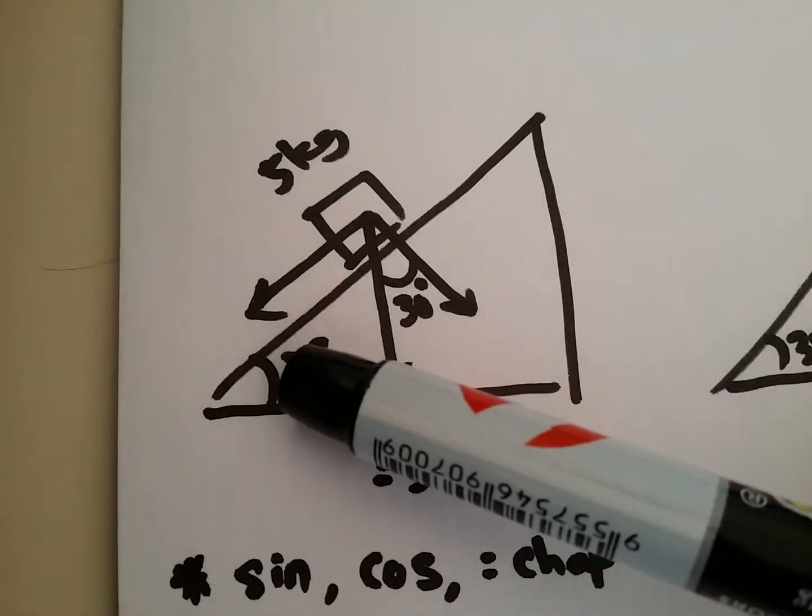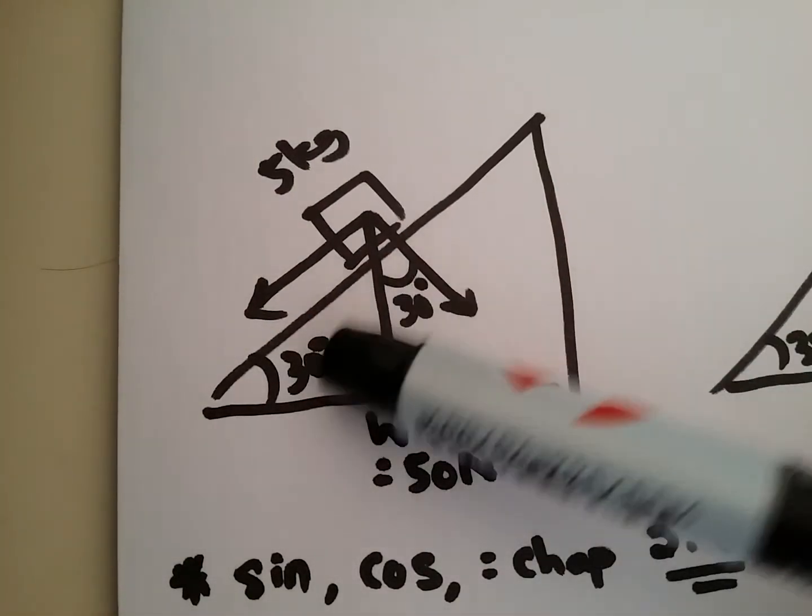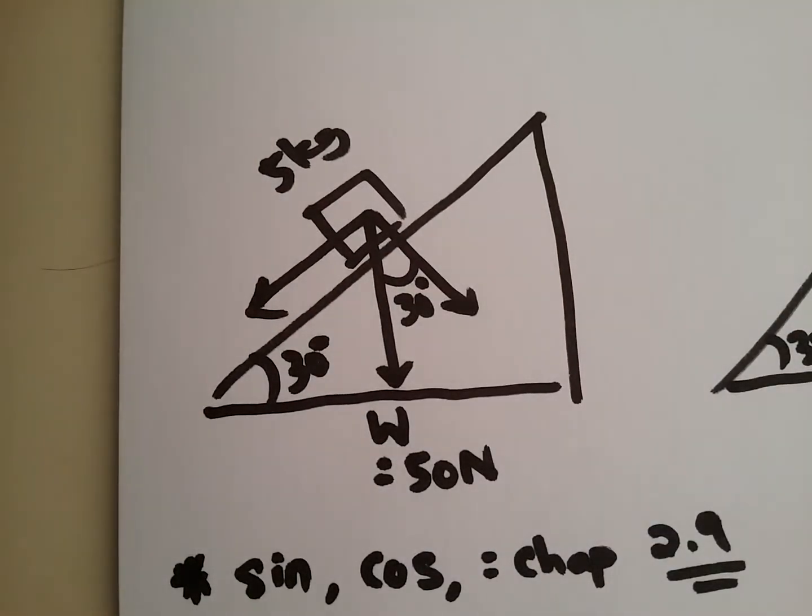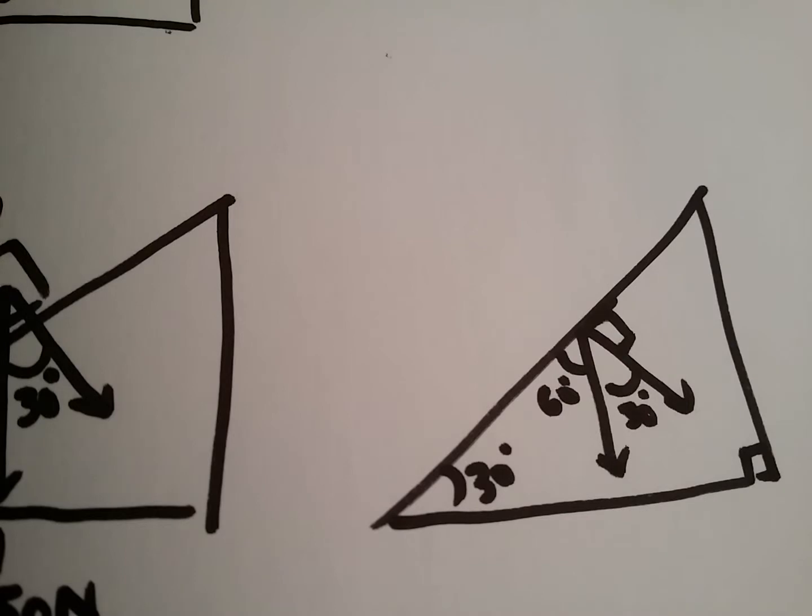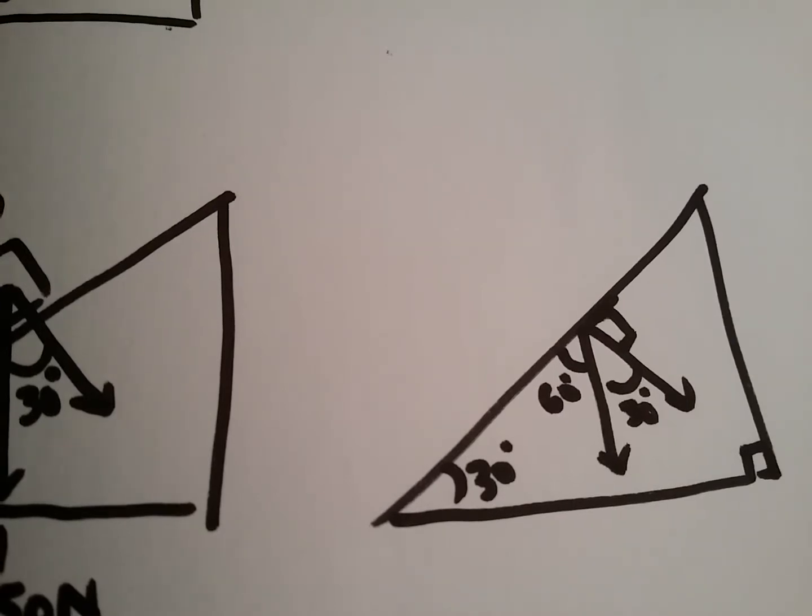Do note that these 30 degrees and these 30 degrees, they are actually the same angle. Why? Take a look at this diagram. You can pause and come back to this diagram, and you will definitely understand this. It's just simple trigonometry.